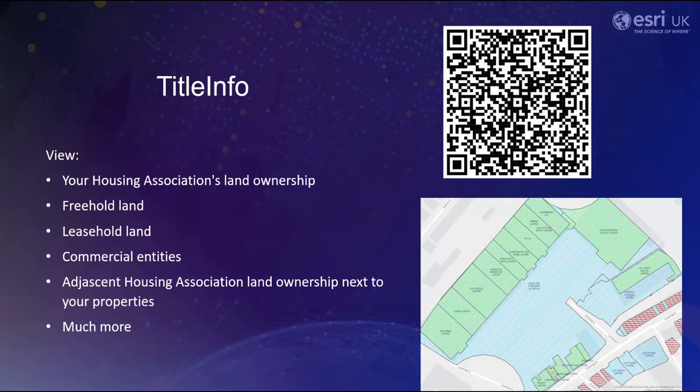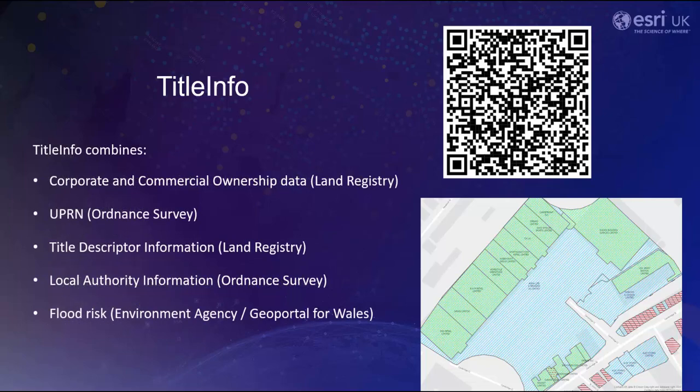Title Info is available for England and Wales and it combines corporate and commercial ownership data from Land Registry, UPRN — which is a unique identifier for each property in England and Wales created by the Ordnance Survey and kept consistent throughout all of their datasets — Title Descriptor information from Land Registry, local authority information from Ordnance Survey, and flood risk information from either the Environment Agency in England or the GeoPortal for Wales.